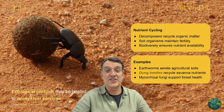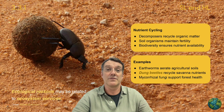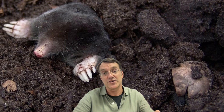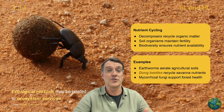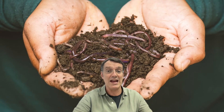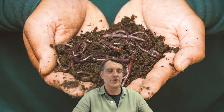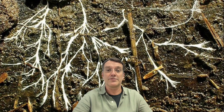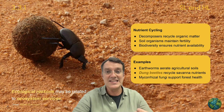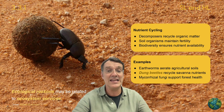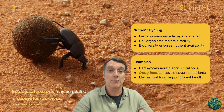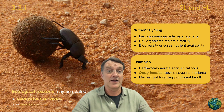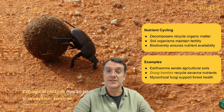Nutrient cycling represents yet another ecological justification for conservation. Decomposers recycle organic matter, soil organisms maintain fertility, and biodiversity ensures nutrient availability. Earthworms aerate agricultural soils, dung beetles recycle savanna nutrients, and mycorrhizal fungi support forest health. These natural recycling systems maintain ecosystem productivity without requiring human intervention, technology, or economic investment.